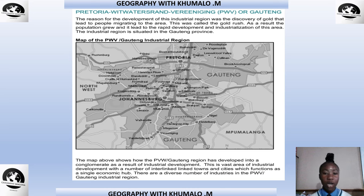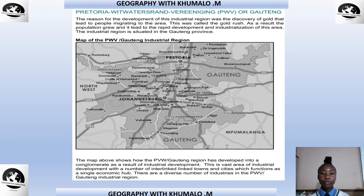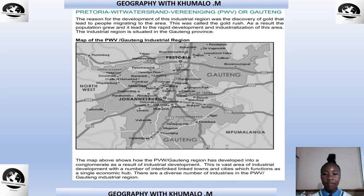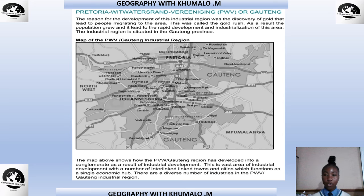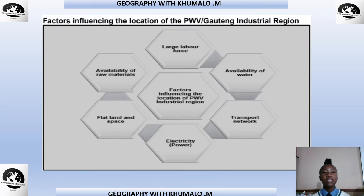The industrial region is situated in Gauteng Province. The PWV Gauteng region has developed into a conglomerate as a result of industrial development. It is a vast area of industrial development with a number of interlinked towns and cities which function as a single economic hub. There are a diverse number of industries in the PWV Gauteng industrial region.